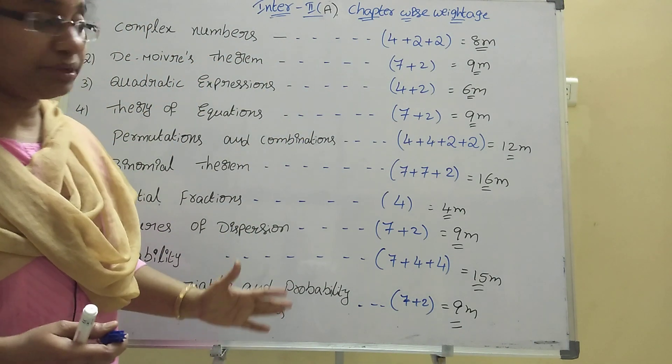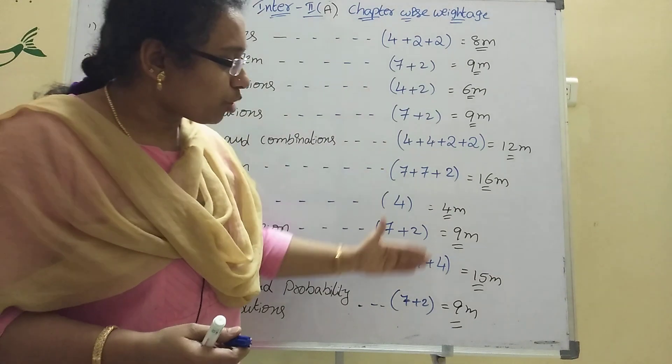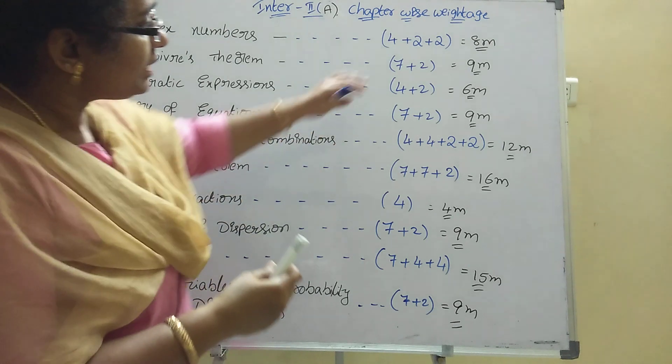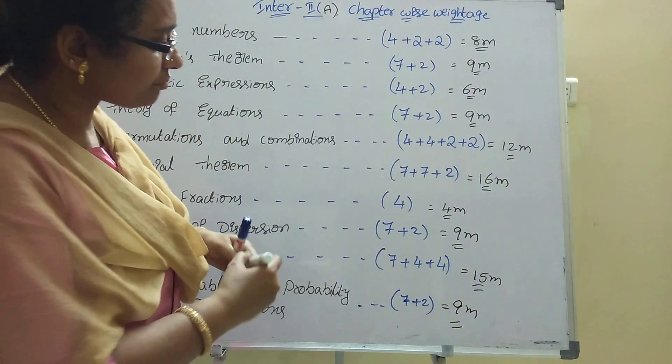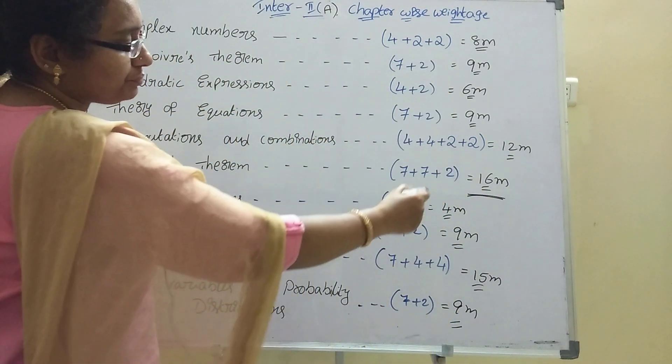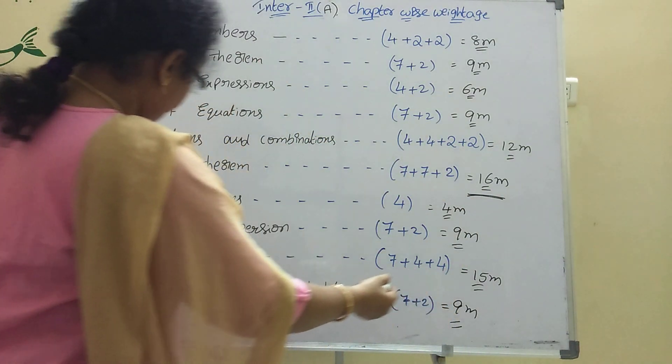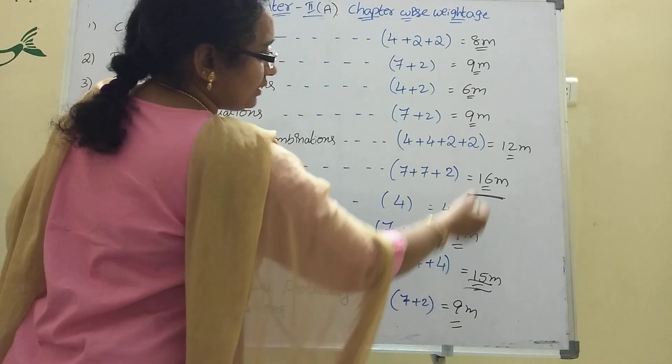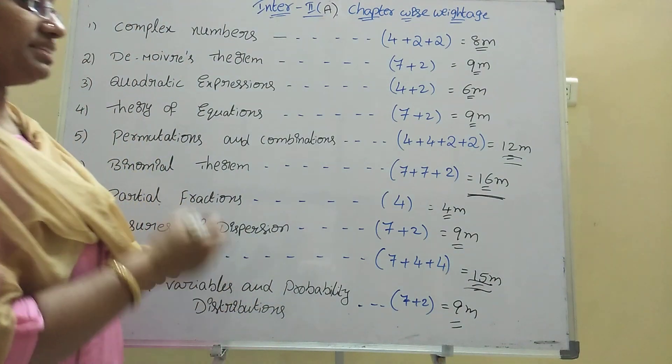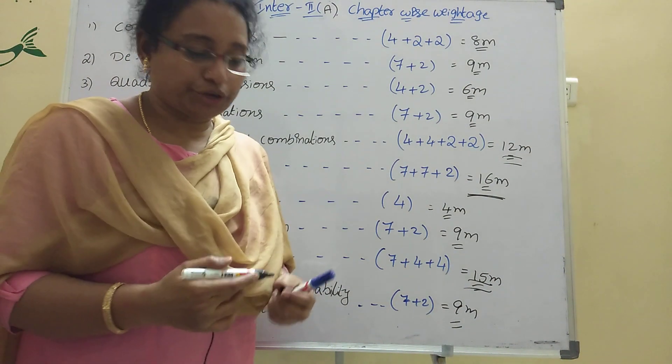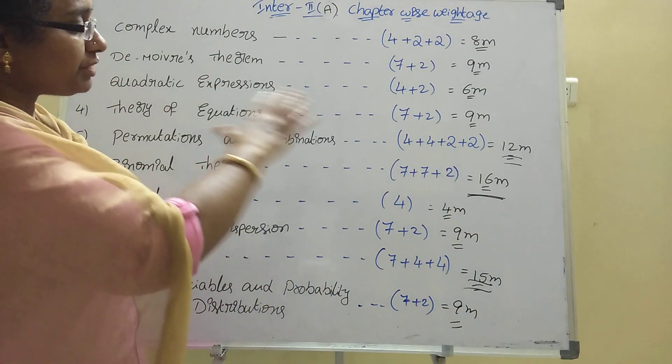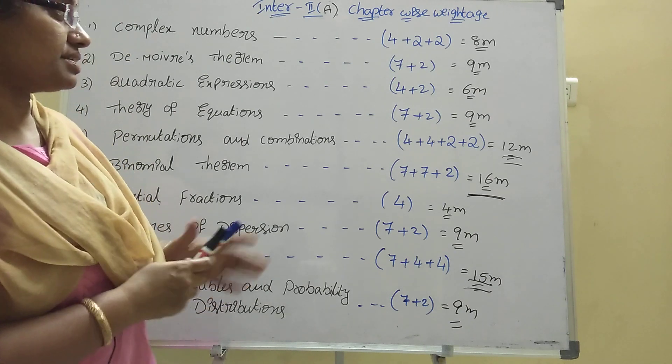All 10 chapters have 7-marks, 4-marks, and 2-marks as I wrote. More weightage is in binomial theorem, 16 marks. After that, probability 15 marks, then permutations and combinations 12 marks. Not like matrices 22 marks or vectors. Here every chapter has different weightage. You should practice like this.